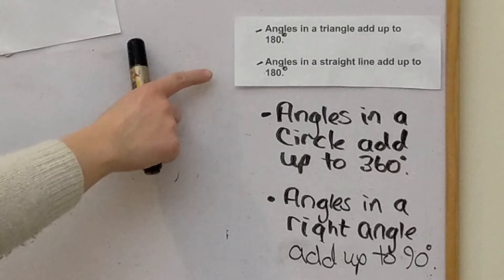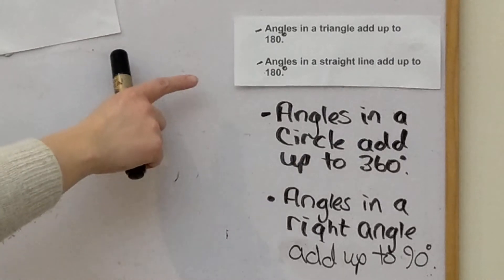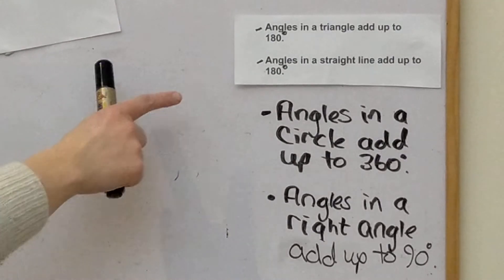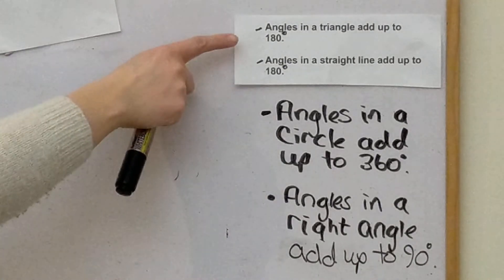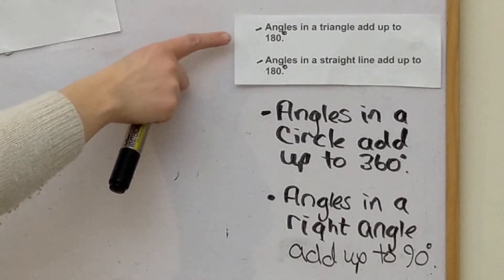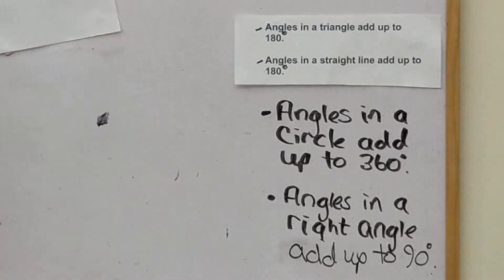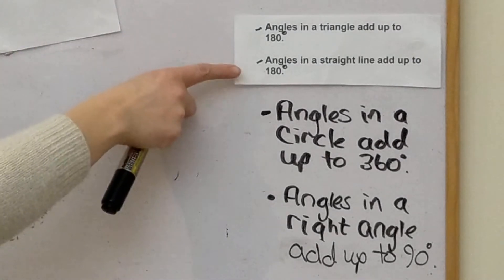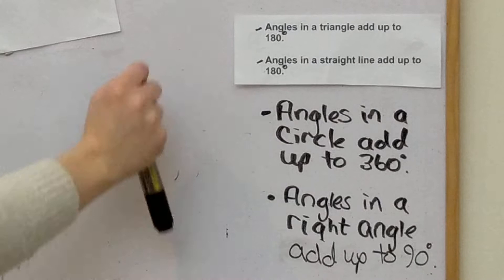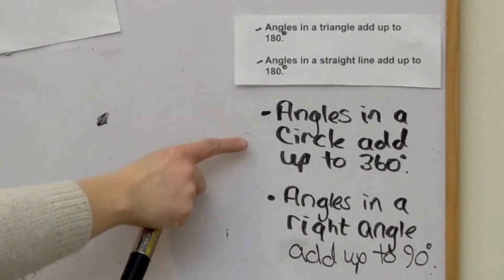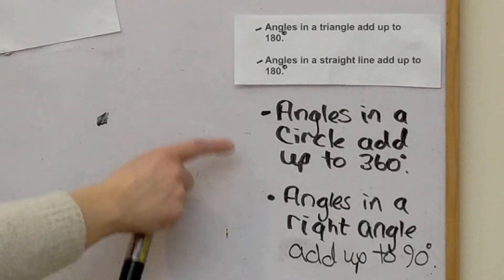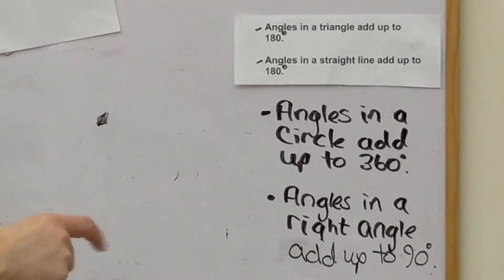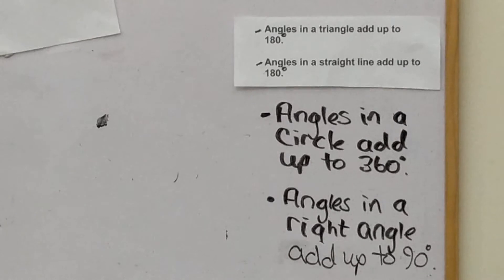Before we do the actual examples, let's look at these rules we should already know from earlier stages of National 5: angles in a triangle add up to 180 degrees; angles in a straight line add up to 180 degrees; angles in a circle add up to 360 degrees; and angles in a right angle add up to 90 degrees. These are pieces of knowledge you'll also apply in these questions.